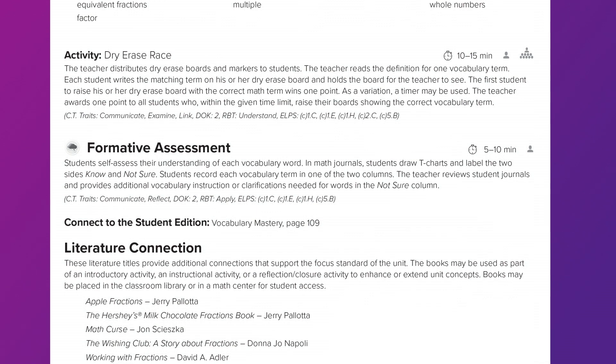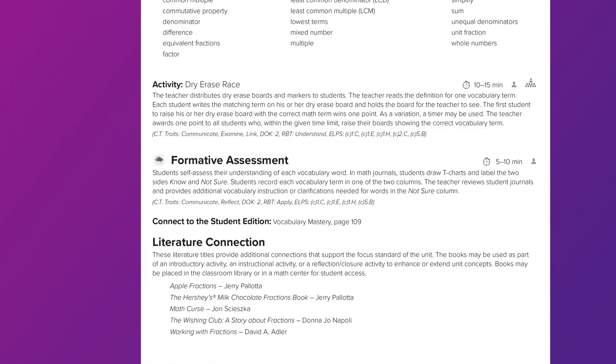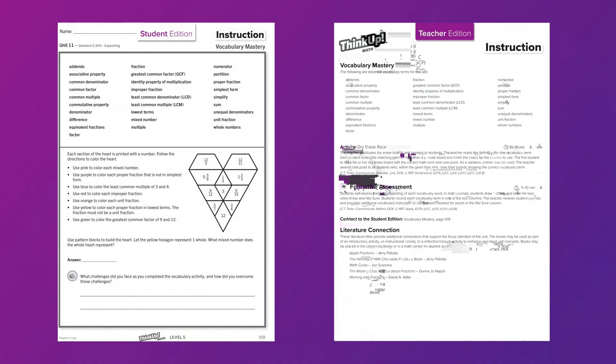In this unit, students are asked to self-assess by creating a T-chart and labeling one column no and the other not sure. Students will then go through this list of vocabulary and categorize each word into one of the columns. As a teacher reviews student charts, they are able to identify difficult words and design the instruction to meet the needs of their students.